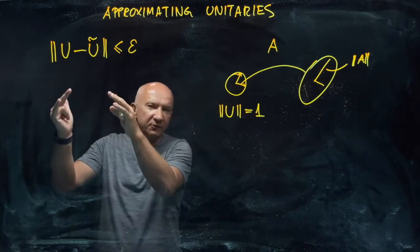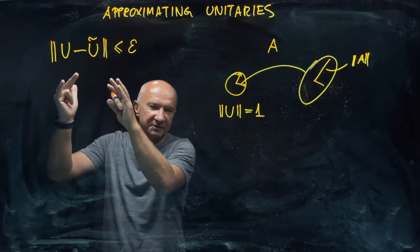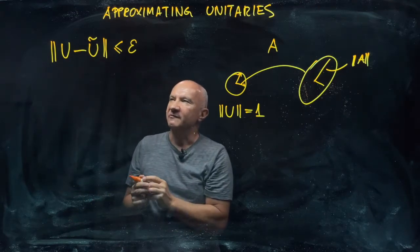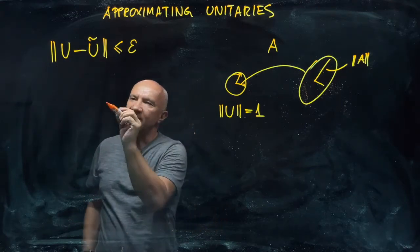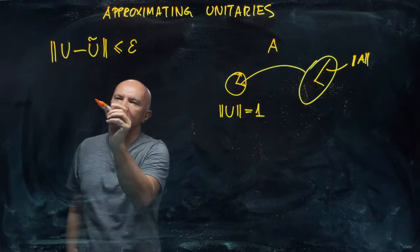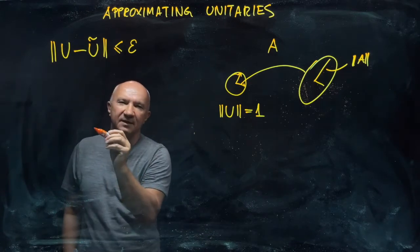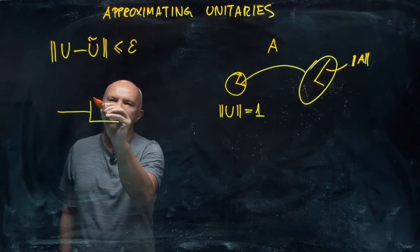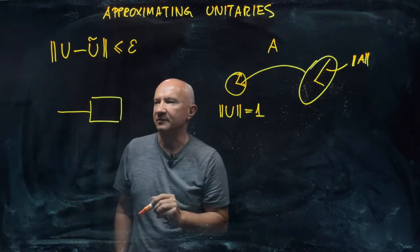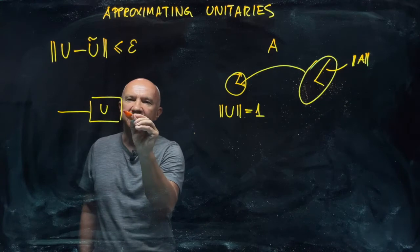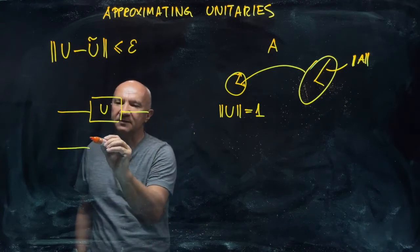Now, what is more important here is the physical meaning of this expression. What does it really mean physically? Well, think about it this way. So suppose I have a unitary operation acting on some system. It could be a qubit. Just think about a circuit. So one of them is u and the other one is just u tilde.